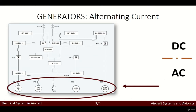So first of all, the generators that we have in aircraft are mainly two: generator number one and generator number two, which are located in each one of the engines. If we have an aircraft which has four engines, for instance, we will probably see that this schematic changes to generators one and two and generators three and four, because usually per each one of the engines we will get a generator.